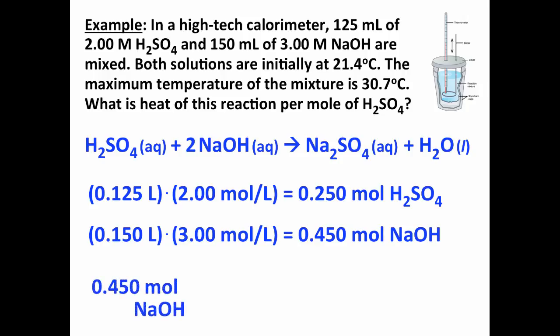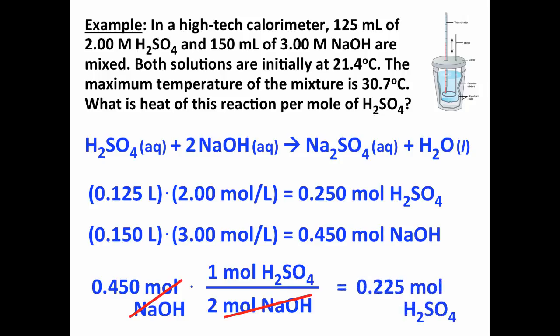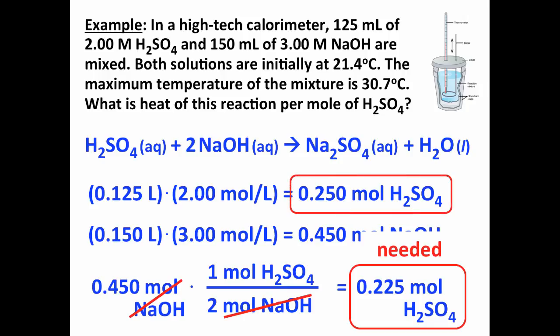And now we note that if we have 0.45 moles of NaOH and it reacts on a one-to-two stoichiometric basis with the sulfuric acid, then the 0.450 moles of NaOH requires 0.225 moles of H2SO4 to react with it. So, that's how many moles of H2SO4 are needed. But we note that we actually have 0.250 moles of H2SO4. So, there's more sulfuric acid available than is needed for the reaction, which means that the sulfuric acid is the excess reactant. The sodium hydroxide is limiting.